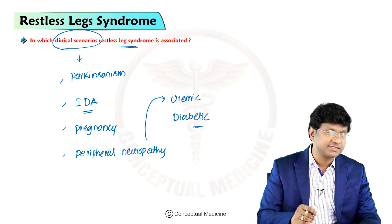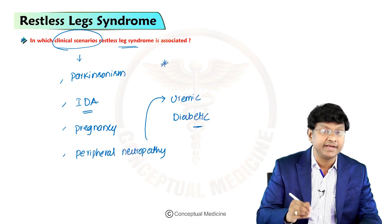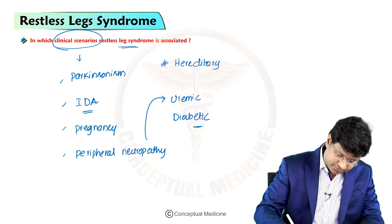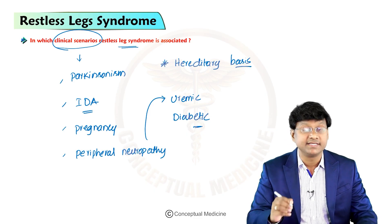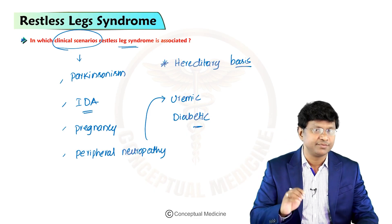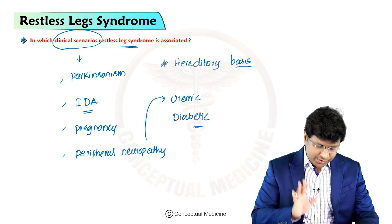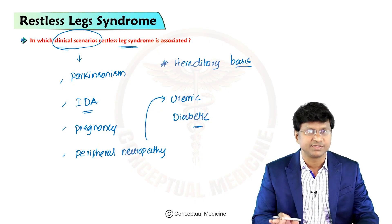Restless Leg Syndrome may also have a hereditary basis. Several genetic loci have been associated with the disorder — it may have a genetic basis. That is about the etiology causing Restless Leg Syndrome.